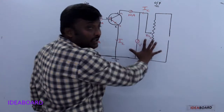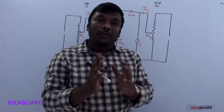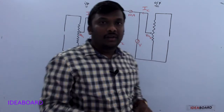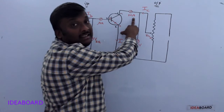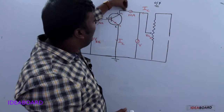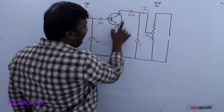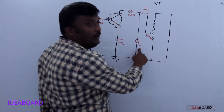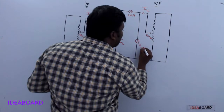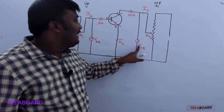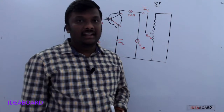The output is taken across the collector-emitter portion. Output characteristics give the relation between output voltage and output current. The output current IC is measured using a milliammeter. To measure voltage across collector and emitter, a voltmeter is connected, denoted as VCE — voltage across collector and emitter.